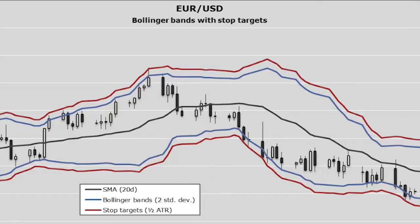However, in roughly 10% of cases you will have a break outside the bands, and this is when the asset may be overextended and you need to consider whether you should implement a mean reversion trade.